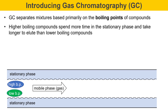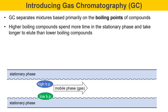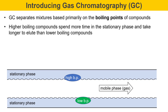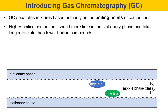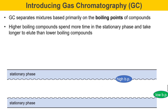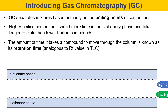The molecules move at different rates because the high boiling compound spends more time in the stationary phase. The low boiling compound spends less time in the stationary phase and therefore moves faster through the column. Boiling point is the key property that determines how much time a compound will spend in the stationary phase versus the mobile phase. The amount of time it takes a compound to move through the column is known as its retention time. This is a value that's analogous to RF value in TLC. RF was retention factor in TLC. Retention time in gas chromatography is a measure of how fast molecules move through the column.